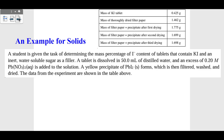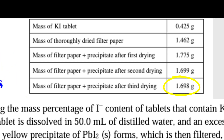Here's an example primarily involving solids. A student is given a test to determine the mass percentage of iodide (I⁻) in a tablet that contains potassium iodide (KI). They take some KI, mix it with Pb(NO₃)₂, and they get a yellow precipitate of PbI₂ solid, which is filtered, washed, and dried. We take the final mass of the precipitate and the filter paper after drying to completion. We have 1.698 grams of the filter paper and the PbI₂ precipitate.